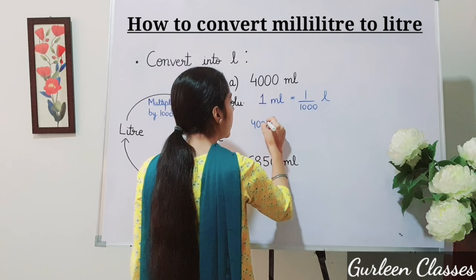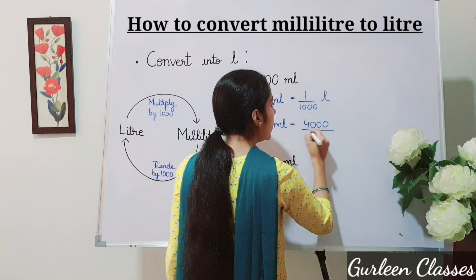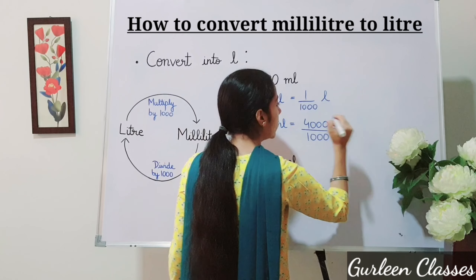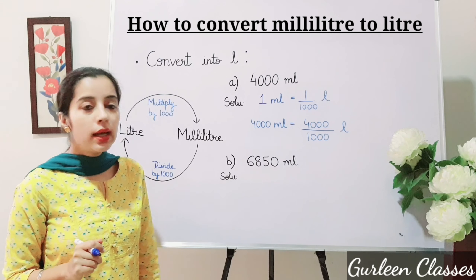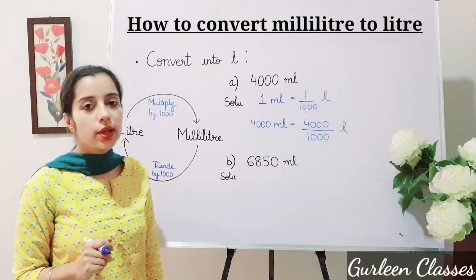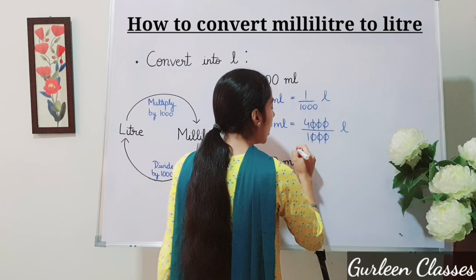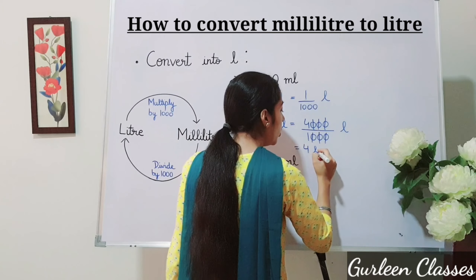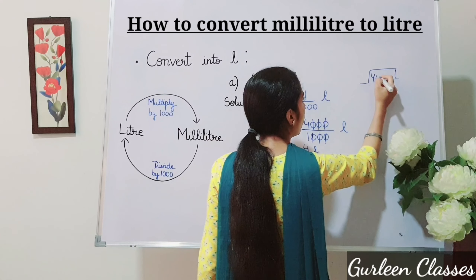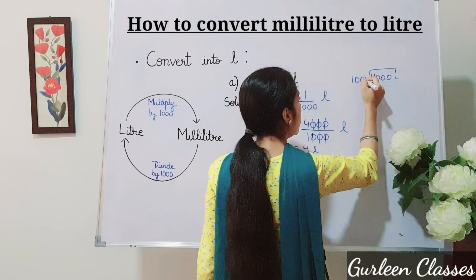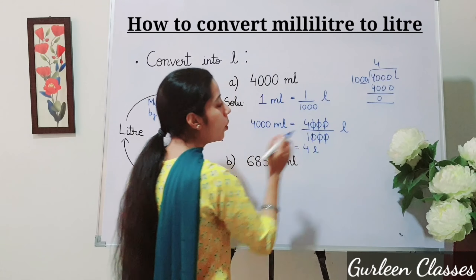Four thousand milliliter is equal to four thousand divided by one thousand liter. We just cut the zeros — cut three zeros from four thousand and three zeros from one thousand. So we have divided directly: the answer is four liter. You can also write four thousand divided by one thousand; one thousand folds into four thousand, giving four liter.